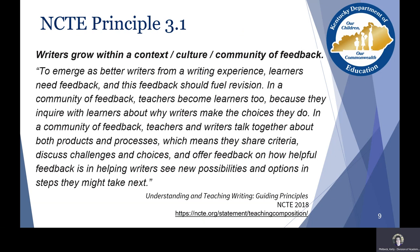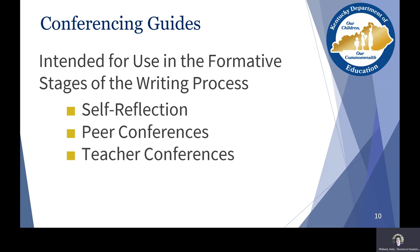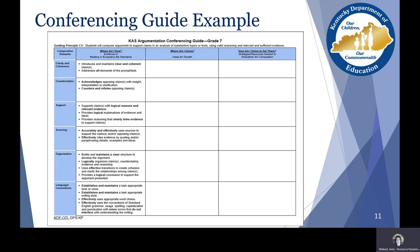When we think about feedback and conferencing with student writers, I always think about NCTE's Understanding and Teaching Writing, Principle 3.1, where writers grow within a context, a culture, and a community of feedback. Our Conferencing Guides are built around this principle of giving students feedback and having those conversations that promote growth. They are intended for use in the formative stages of the writing process and are great tools for self-reflection, peer conferencing, and teacher conferences.